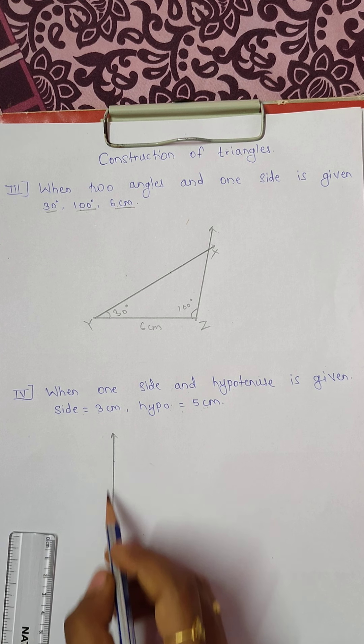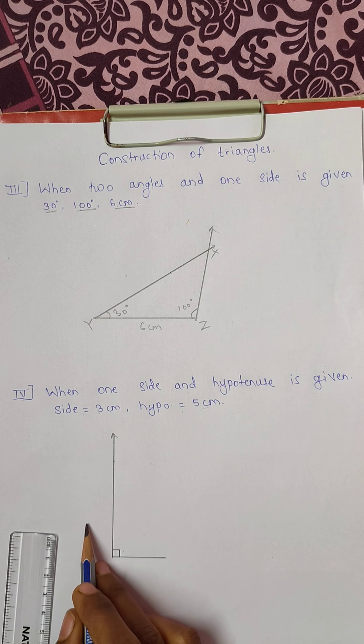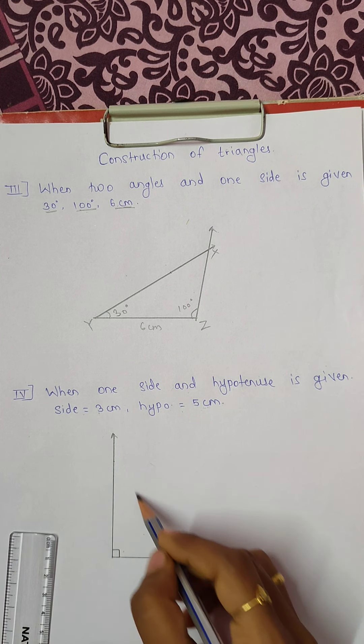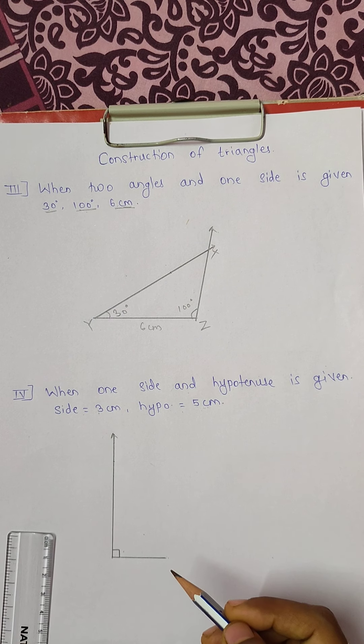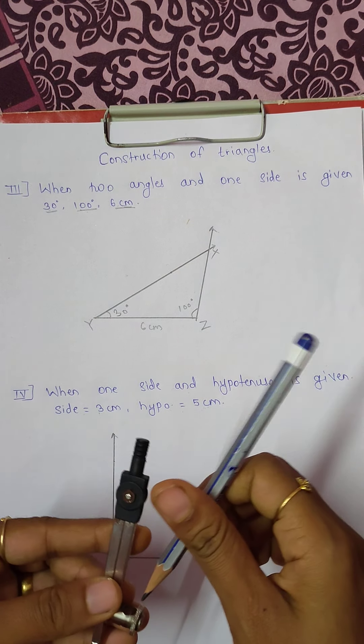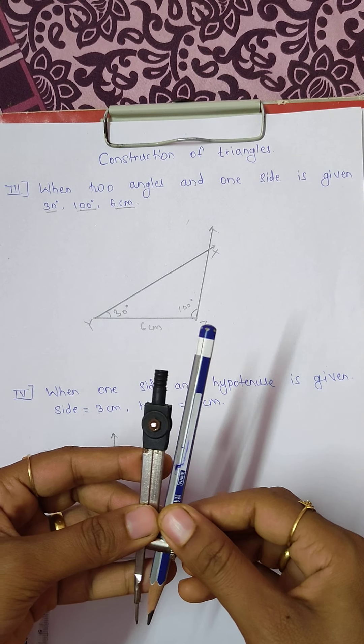Now the hypotenuse here, if the 90 degree angle is there, is present to this side, then the hypotenuse will be opposite to 90 degrees. So we have to take the sharp end of the compass to the opposite side of the given right angle.